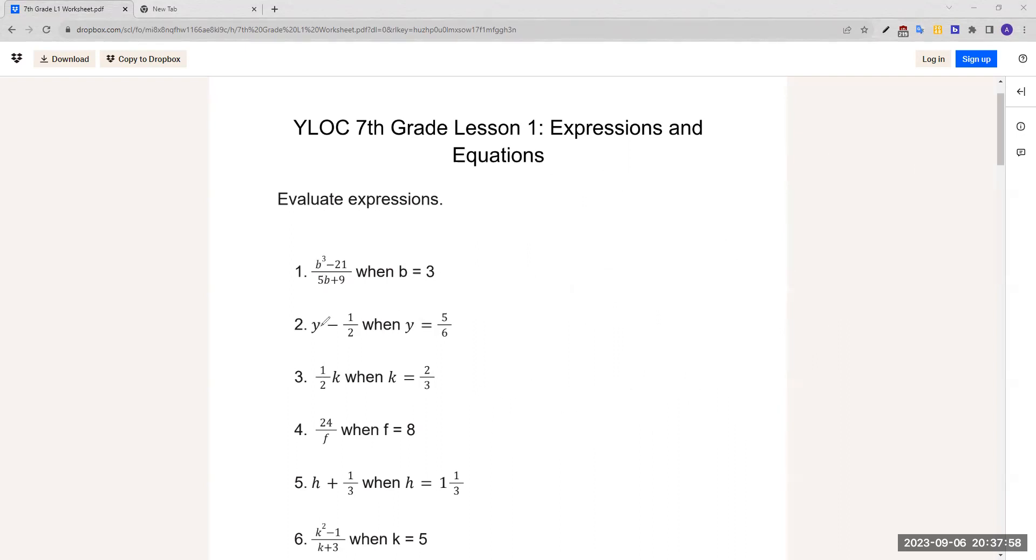For number 2, y minus 1 squared when y equals 5 over 6. We plug this in again. There's y minus 1 half. We can't just subtract this straight on because the denominators need to be equal. We need to change this 1 half to make the denominator 6. We would multiply this by 3, so the denominator is 6, which would be 3 over 6. Now it's 5 over 6 minus 3 over 6, which is 2 over 6.